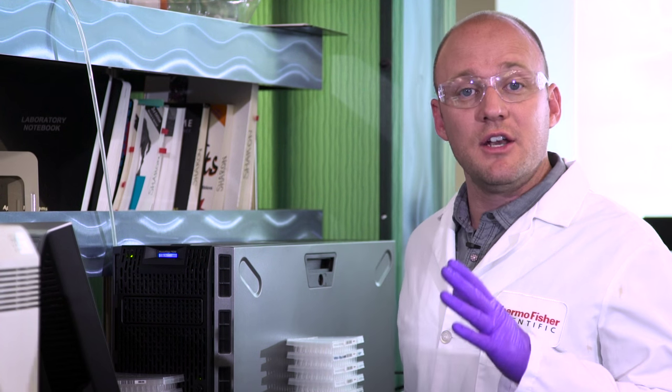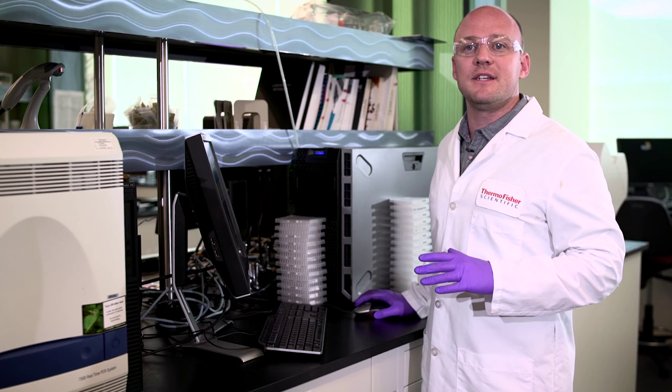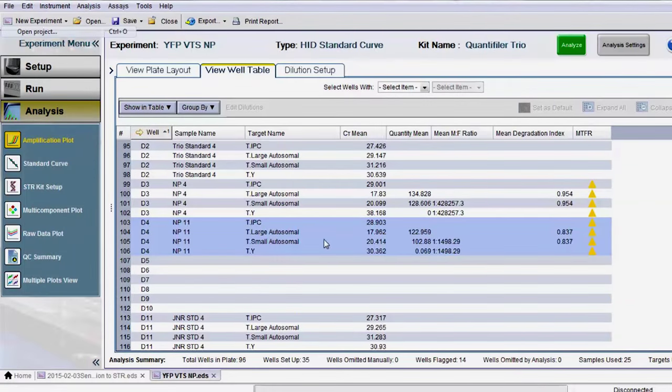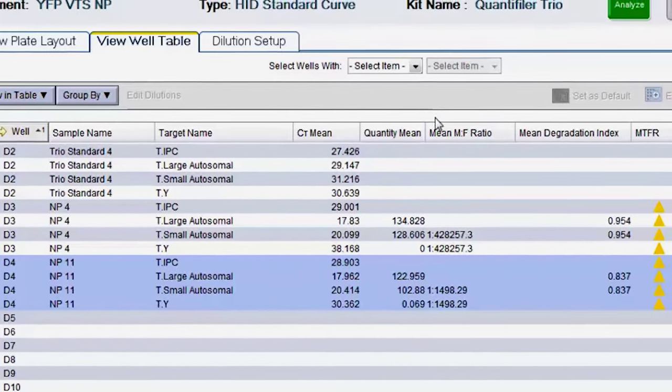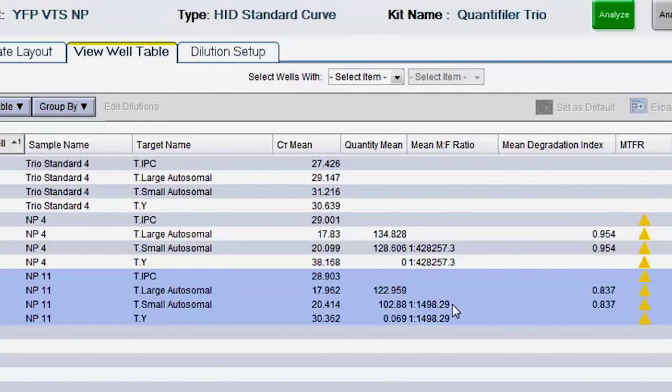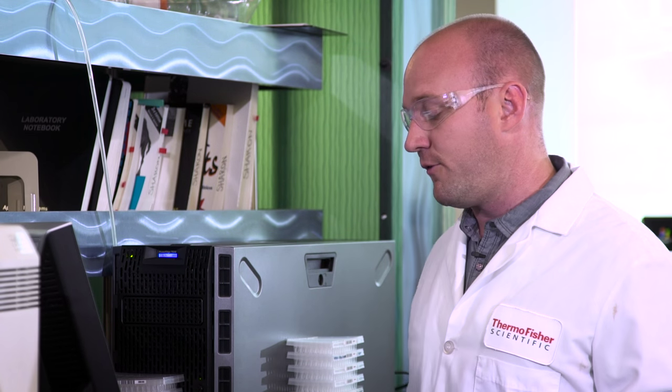Now, let's consider another sample. In this case, we have a vaginal swab that was taken two and a half days post-coital. For this sample, the presence of male DNA was confirmed by the Quantifiler Trio Kit. Our quant result, as you see here, focusing on sample NP-11, shows that we have a male-to-female ratio of 1 to 1498. Whereas your typical workflow might be an autosomal amplification kit, based on these values, we can be confident upfront that an autosomal STR kit would not yield a quality STR profile.